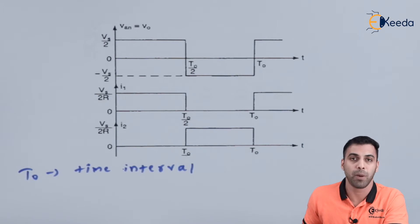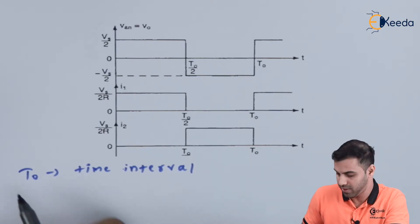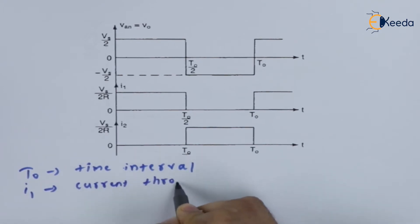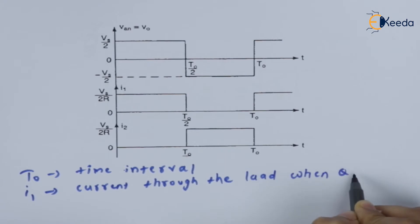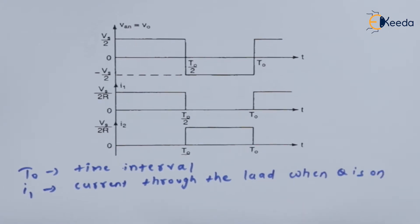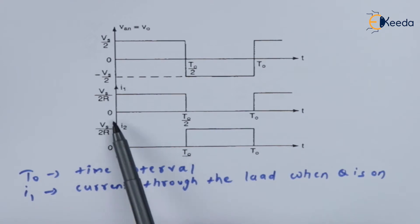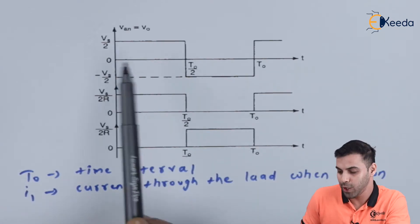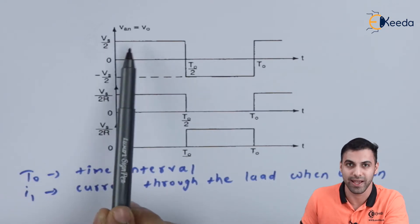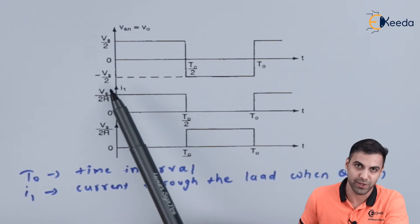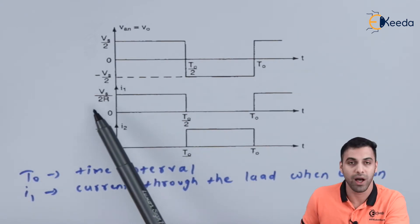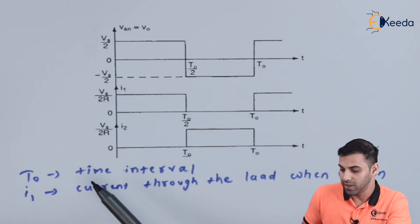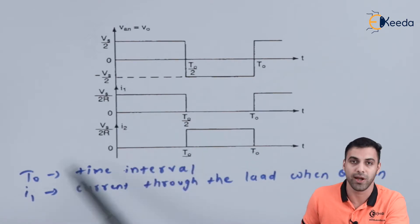Let's talk about the current I1 — that is the current flowing through the load when transistor Q1 is on. When Q1 is on, from 0 to T0/2, we are getting a positive current. When we switch on Q2, the maximum value of voltage is Vs/2 and the minimum is minus Vs/2. The maximum value of current is Vs/2R and the minimum is 0. When the second transistor is on, the maximum current is again Vs/2R and the minimum is 0.